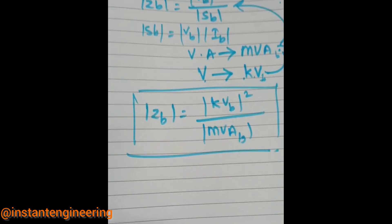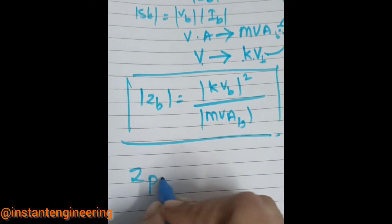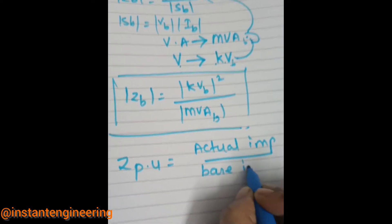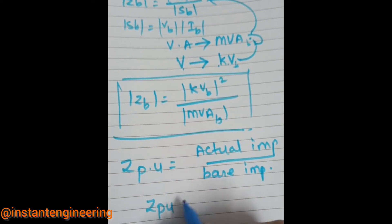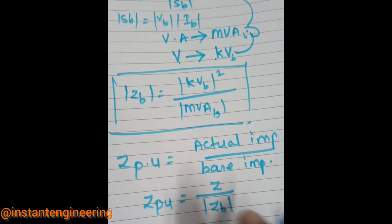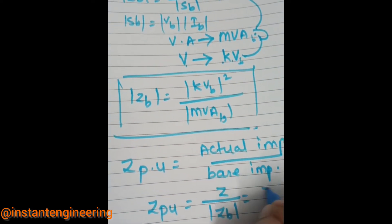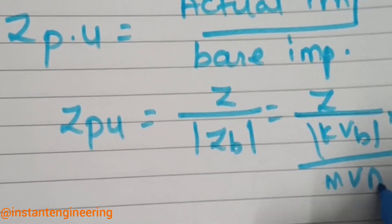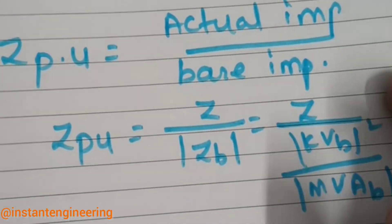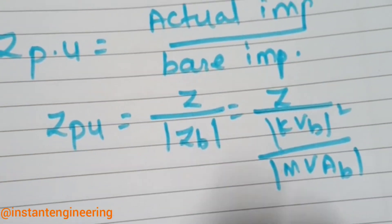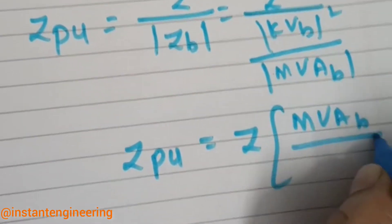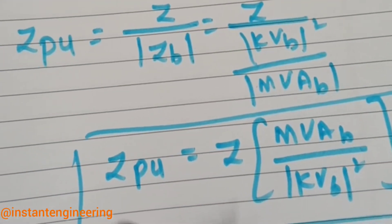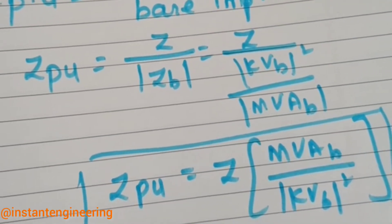The per unit impedance ZPU can be written as actual impedance divided by base impedance: ZPU = Z / ZB. Substituting ZB = KVB²/MVAB, the denominator goes to the numerator, giving ZPU = Z × MVAB / KVB². This is the per unit impedance expression for a single phase system.